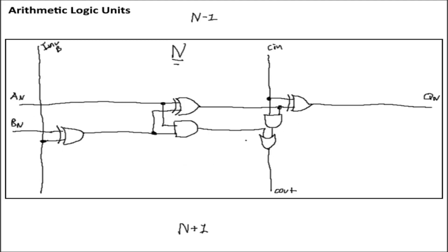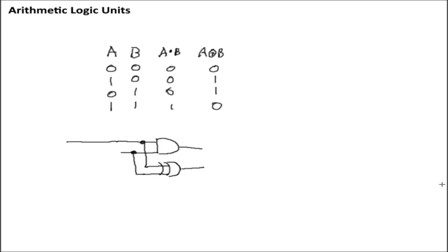The next step to transforming this adder circuit into our ALU is to add our logic circuits. Logic, in the bitwise sense, is just going to be some kind of logic operation between inputs A and B — either AND, OR, NOT, or exclusive OR. We can actually get away with just AND and exclusive OR, because if we look at the truth tables for both A AND B and A XOR B, with A AND B it's only ever on when both inputs A and B are on.